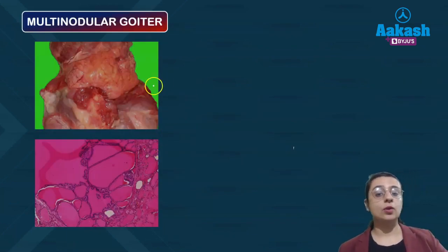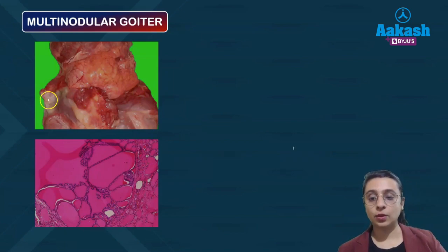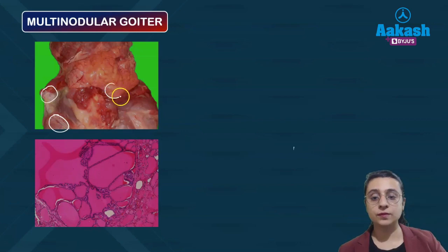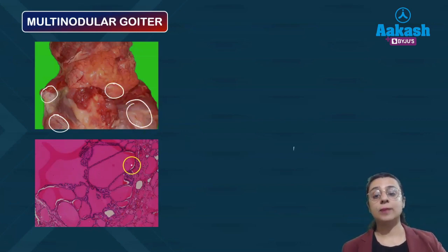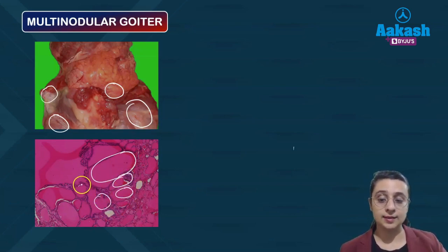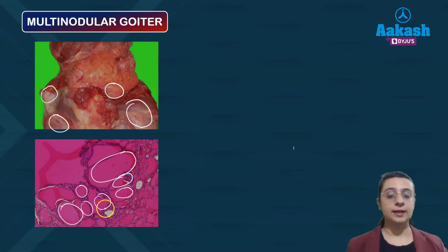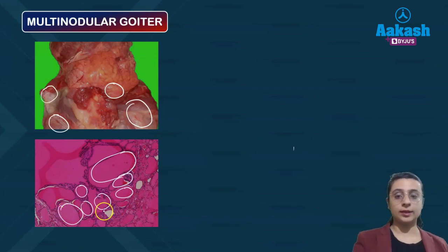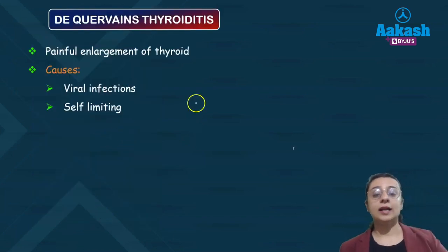Multinodular goiter (MNG), as the name suggests, shows multiple nodules of variable sizes on the surface of the thyroid. On microscopy, the follicles are also of variable size, which is the characteristic finding.